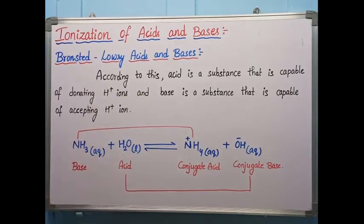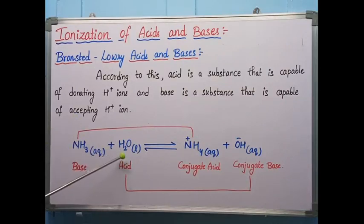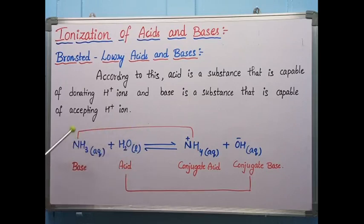Here we can observe that the conjugate acid is obtained by adding one proton to the ammonia base, and the conjugate base is obtained by losing one proton from water. The conjugate acid-base pair differs by only one proton.